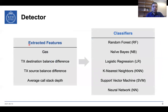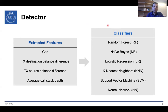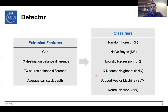The extracted features used in our detector consist of the gas usage of the transaction, the transaction destination, ether balance difference, and the transaction source ether balance difference. We also use the average call stack depth, which is retrieved from the transaction trace itself. The most important part of the detector is the machine learning classifier used to classify the collected transaction metadata as benign or malicious. We have used random forest, naive Bayes, logistic regression, K-nearest neighbors, support vector machines, and neural network as our classifiers, and collected results about each to analyze performance.